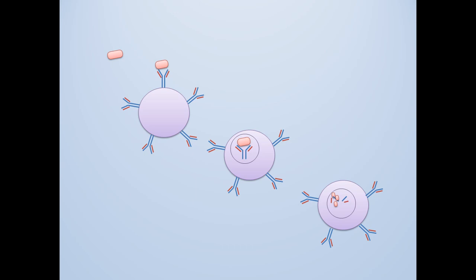B-cells specific for the antigen will use their B-cell receptor, the BCR, to bind to the antigen. Once bound to the antigen, the B-cell internalizes the BCR with antigen and enzymes within the B-cell degrade the antigen down.